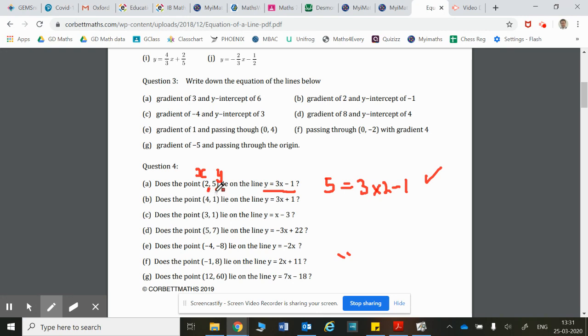You put the x number in and you get the y number out. 3 times 2 take away 1 is 5, so the point is on the line.